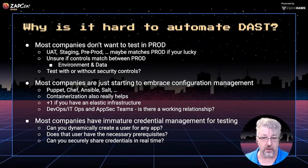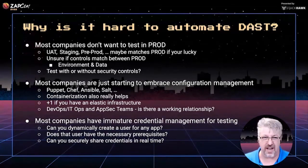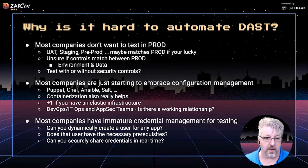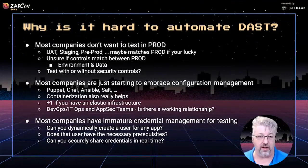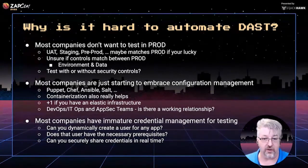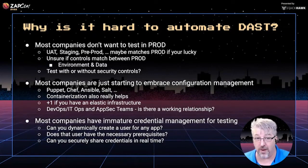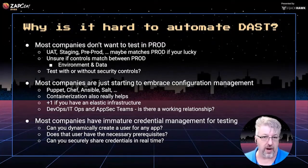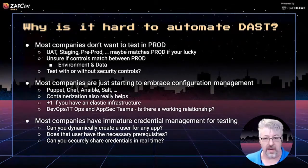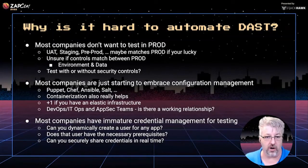Another thing that can get you with DAST automation: companies are just now starting to get a good grasp of DevOps configuration management — whether they're using Chef, Puppet, Salt, Ansible, Terraform, or whatever your favorite flavor is. If they are doing that and have an elastic infrastructure, you're one step ahead — that's very handy for DAST automation. Containers are also super helpful. If you have the ability to deploy infrastructure based on configuration management, go make friends with your DevOps teams, because that can really move you forward in your automation efforts.